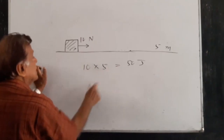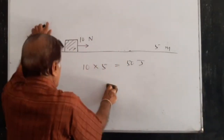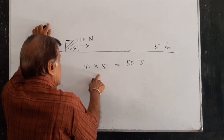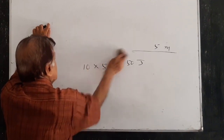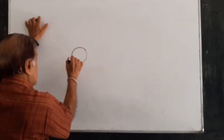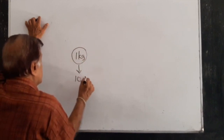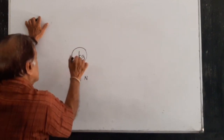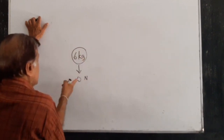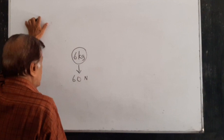So this is the force and this is the distance. By multiplying these two quantities, you can get the work done. Now you know about weight also — if the mass of a body is 1 kilogram, its weight is 10 Newtons. If the mass is 6 kilograms, the weight is 60 Newtons. You have revised this from video 1.